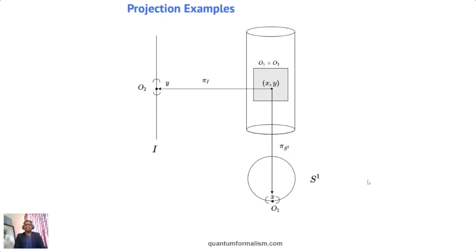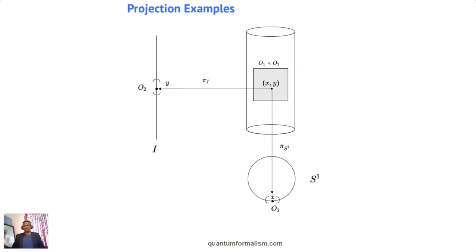Here's an example using the product we constructed before — the unit interval and the circle. You have π_{S1}, the projection that goes from the cylinder to the circle, and π_I, the projection that goes from the cylinder to the unit interval. I encourage you to build more product spaces and projections to see how these things work.